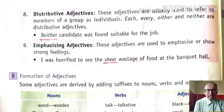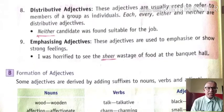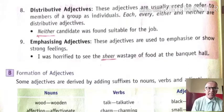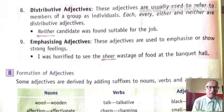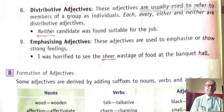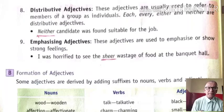Last one, emphasizing adjectives. These adjectives are used to emphasize or show strong feelings. Example: I was horrified to see the sheer wastage of food at the banquet hall — sheer is the word here as an emphasizing adjective.